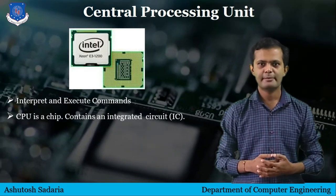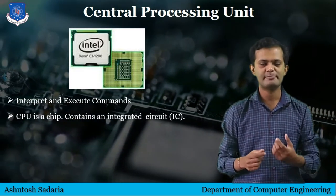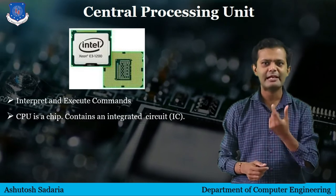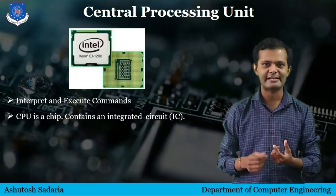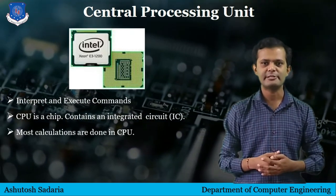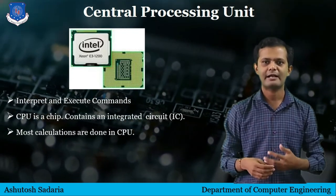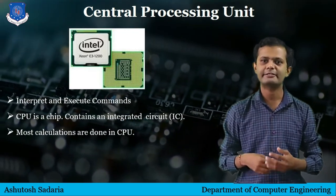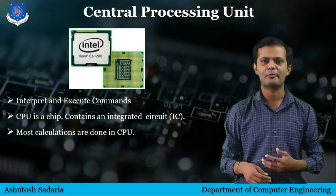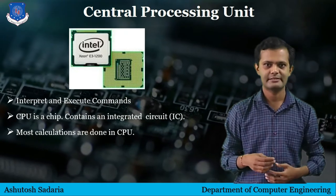CPU is made of a chip. A CPU chip is a very small electronic device that contains an integrated circuit. The CPU chip, or Central Processing chip, is the semiconductor component where most calculations take place.